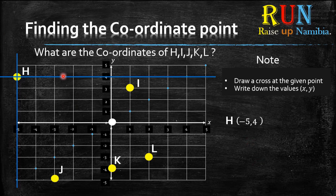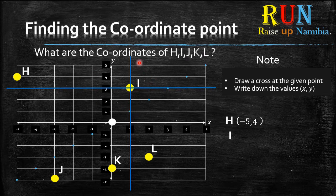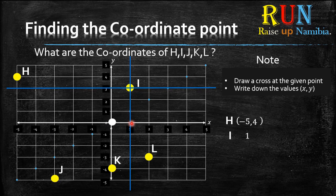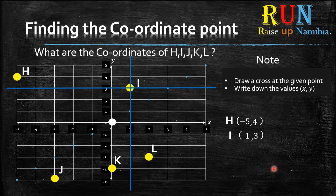Let's move on to I. We do the same thing — draw a cross at I, make the lines long. Then write down the values for x and y. Go to the x-axis first: where the blue line crosses is positive 1. Write that down, put a comma, then go to the y-axis — where the other blue line crosses is positive 3. Write down positive 3, put it into brackets, and we're done.